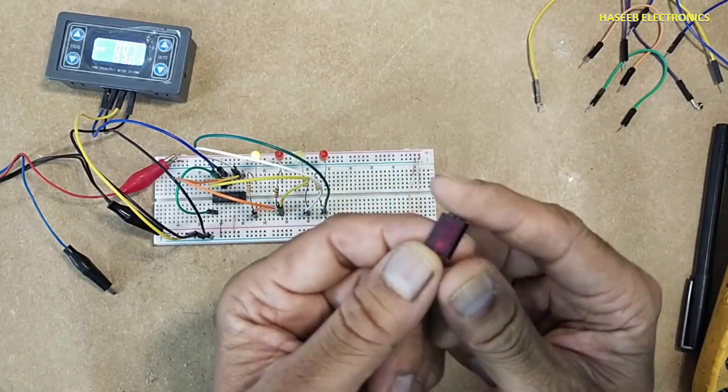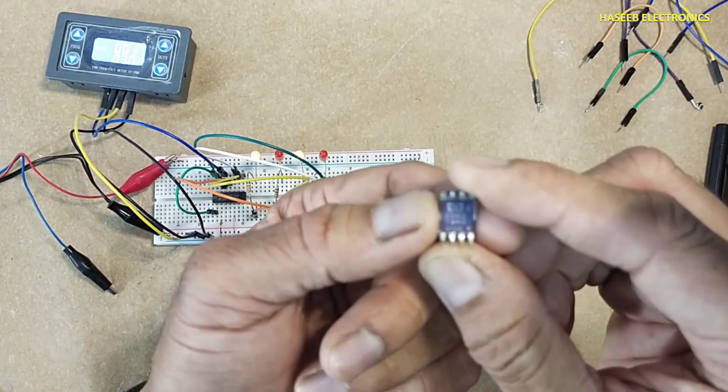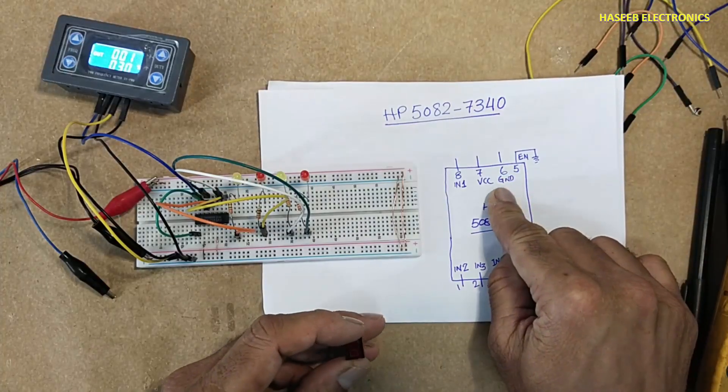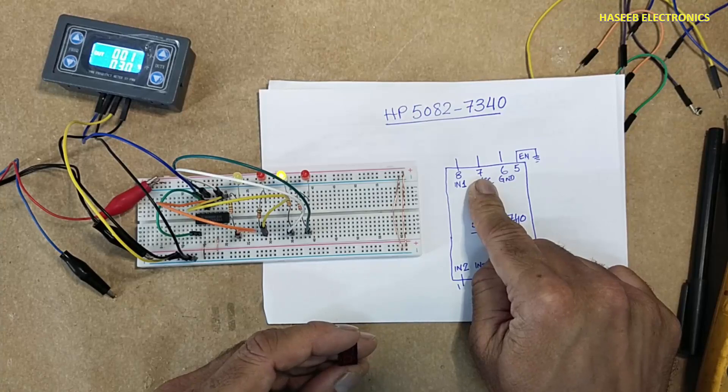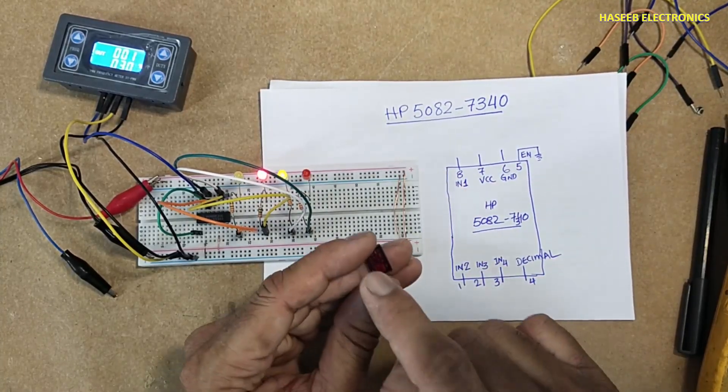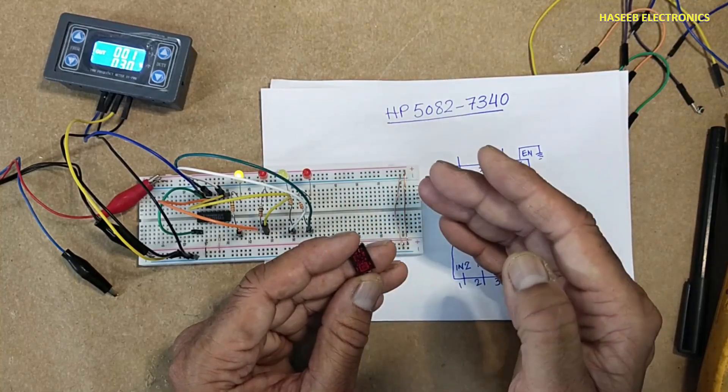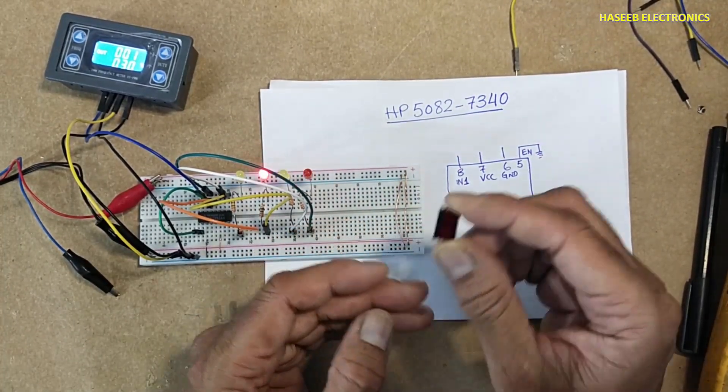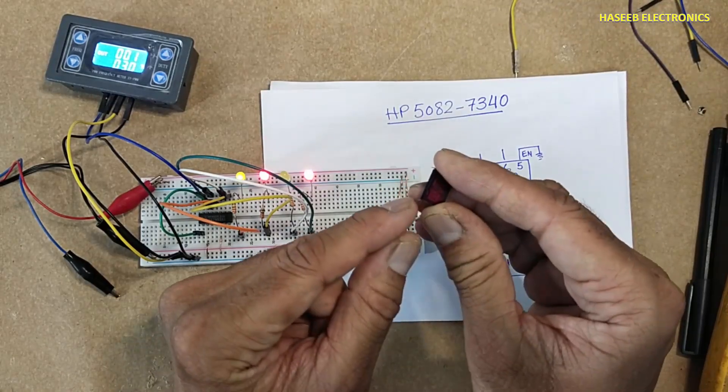It is HP 5082-7340. Pin number six ground, pin number seven VCC five volts. When we use this display we don't need any decoder - it will display hexadecimal code. This is pin number one in the left side.